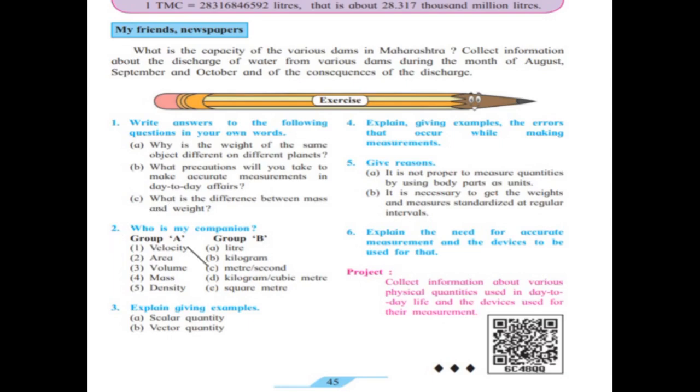Who is my companion? Velocity - meter per second. Area - square meter. Volume - liter.